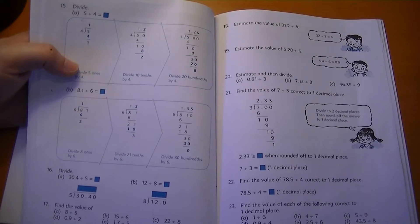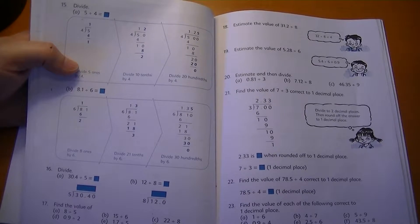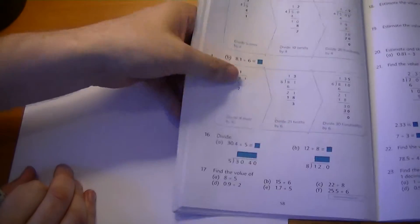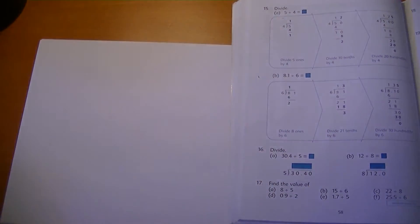So next time you have 8.1 pizzas and you want to share it with six people, give each person 1.35 pizzas. Now we're going to do some exercises down here. So I'm going to write these out so we can see what we're doing. We're going to do number 16A. And Eliana, you've got to help me. Are you going to help me?